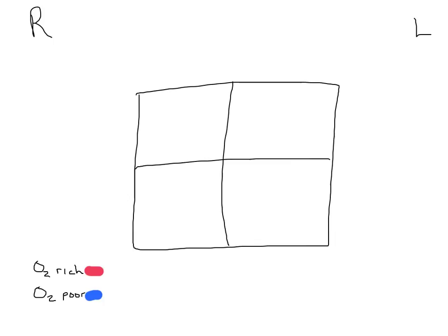I'm going to use this simple diagram of the heart to demonstrate and walk through the blood flow through the heart and the body. This diagram is just a simple square divided in four, and it represents the human heart. We're looking at this anteriorly — the front side of the heart — so remember that the right side of the heart is actually on our left, and the left side is on our right.